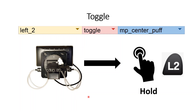This is helpful in games like first-person shooters for the aim button, because the aim button needs to be held down while aiming. But if I set it to toggle, I can simply blow into the center sip and puff and it will hold down the button for me. When I want to stop aiming, I just blow into it again to release the aim button.